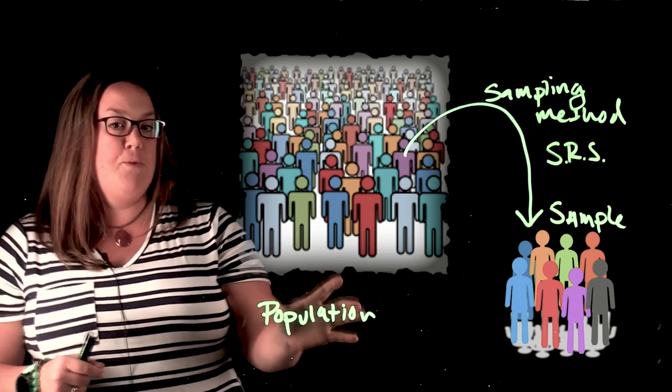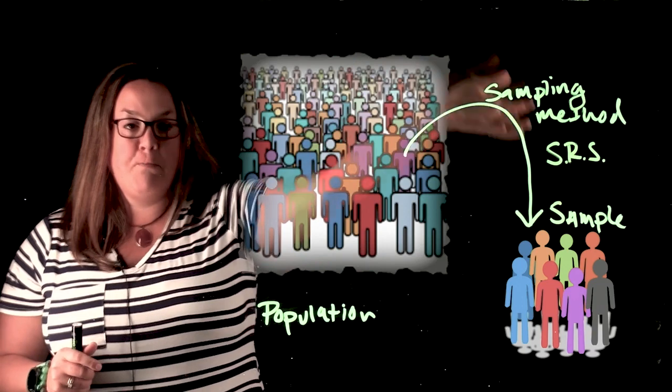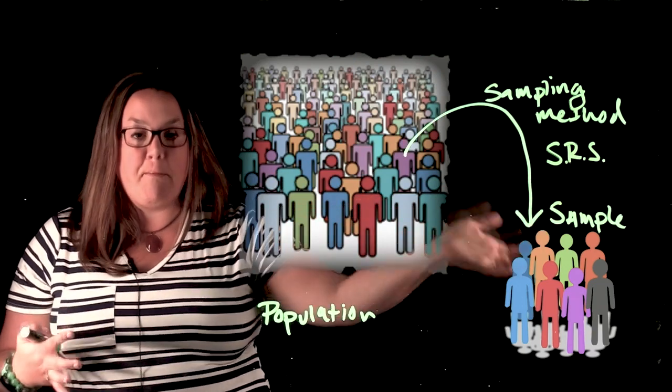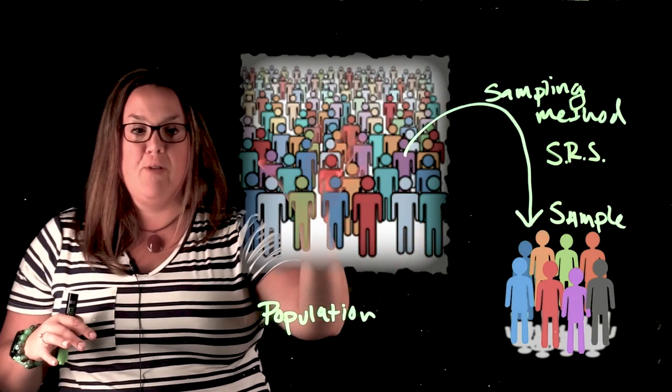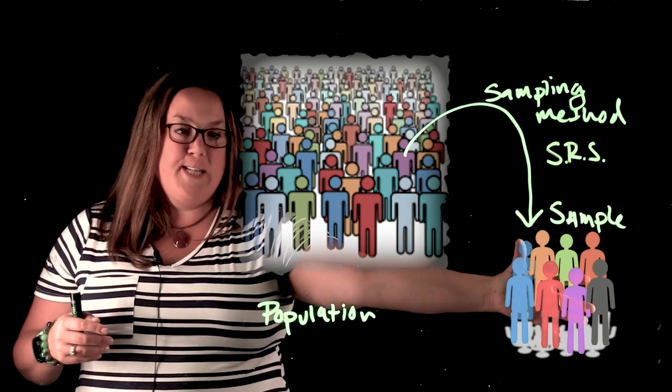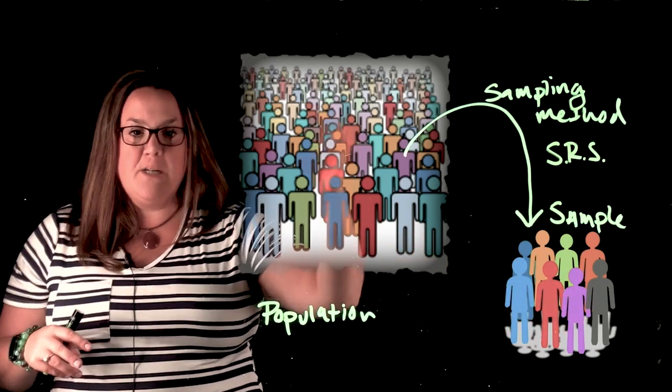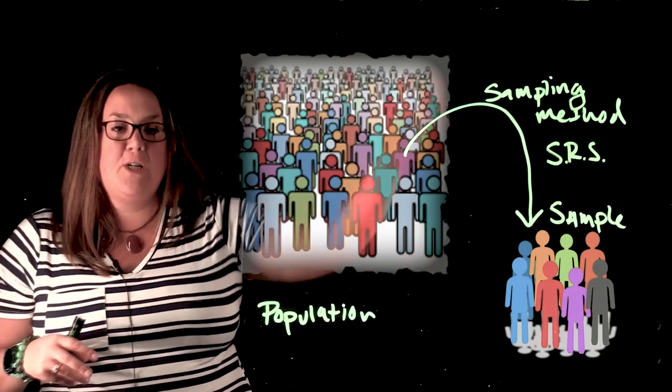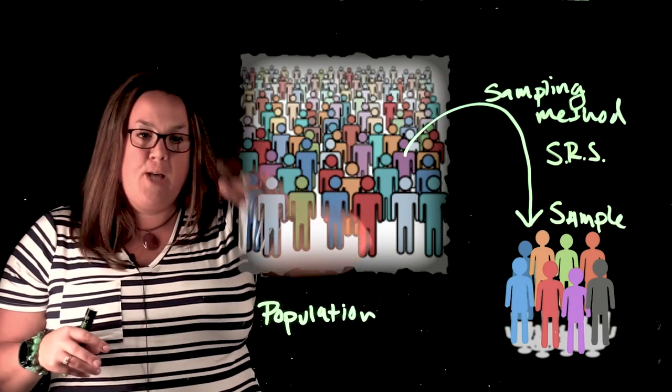This goal would be that you would have some sampling method that created a very representative group of the population. So here you can see that sample that was selected seems to be a fairly good representation of that population that you see.